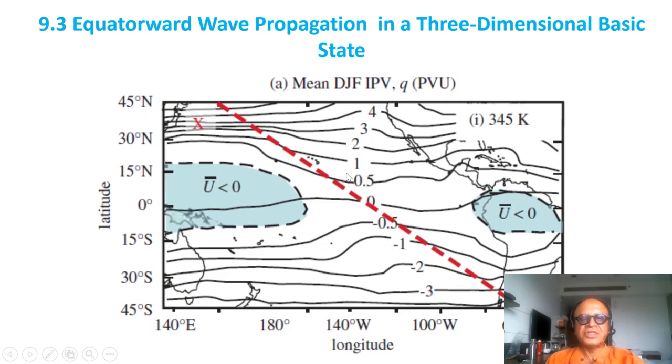We're going through the westerly duct that we have been talking about, with the easterlies on either side and the westerly duct in the middle. This is the isentropic potential vorticity, and you can see the strong gradient here with high values towards higher latitudes, positive in the northern hemisphere, negative in the southern hemisphere.